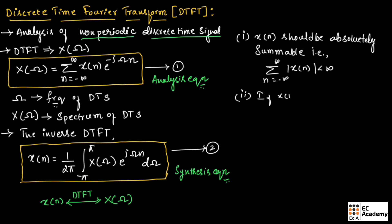If X of n is not absolutely summable, then it should have finite energy. That is, summation n equals minus infinity to infinity of magnitude of X of n squared should be less than infinity.